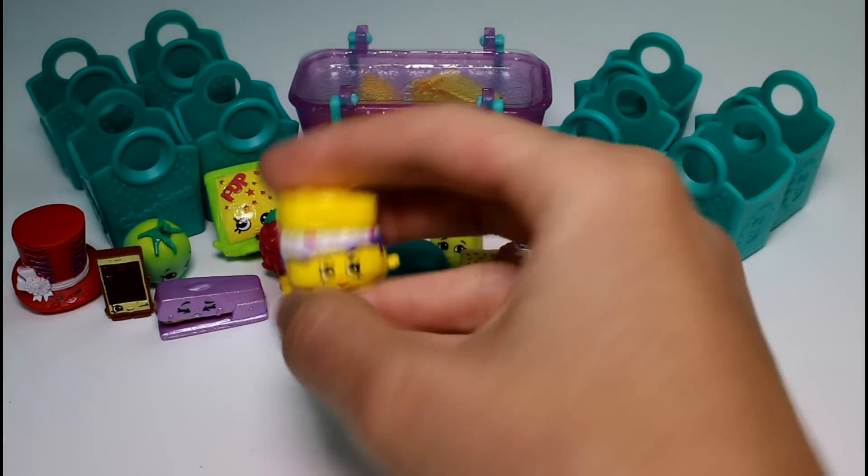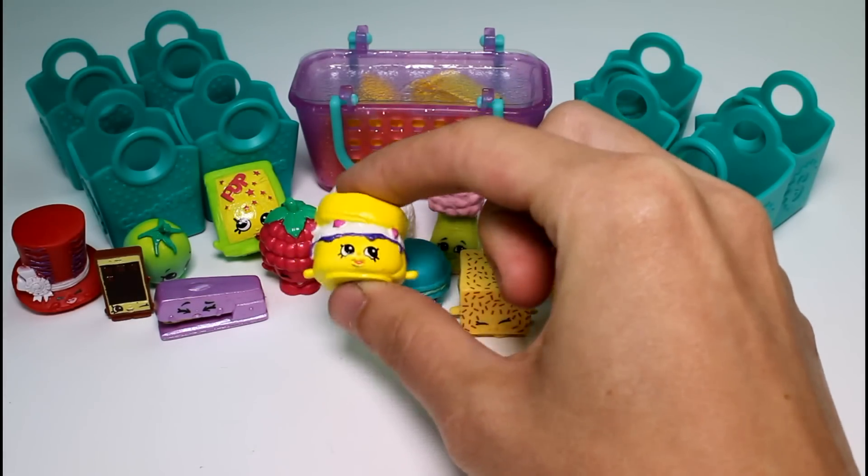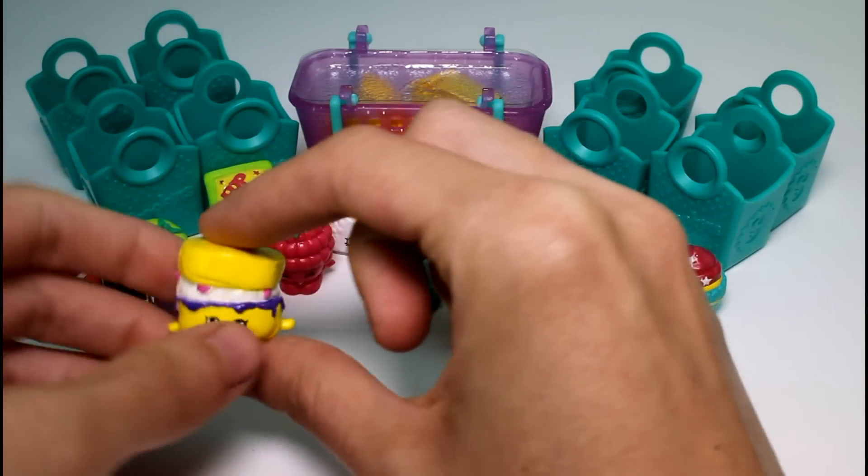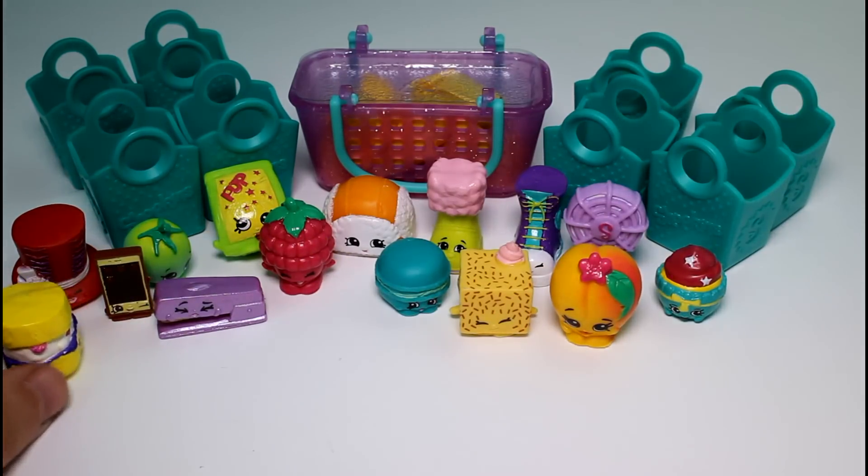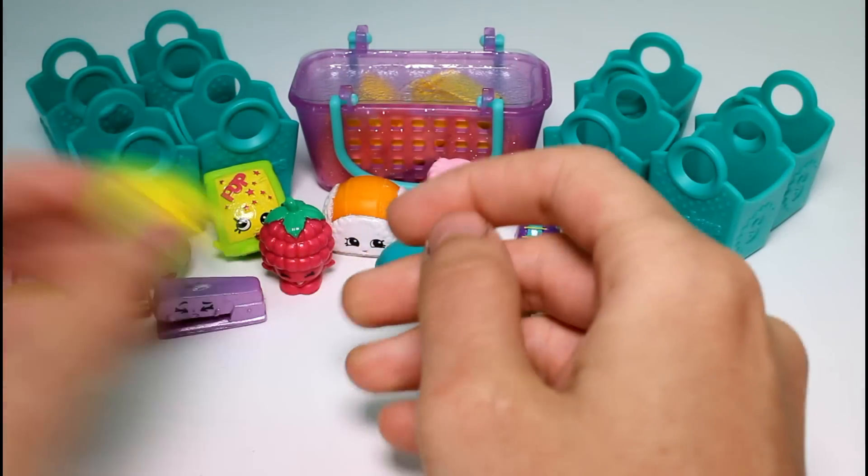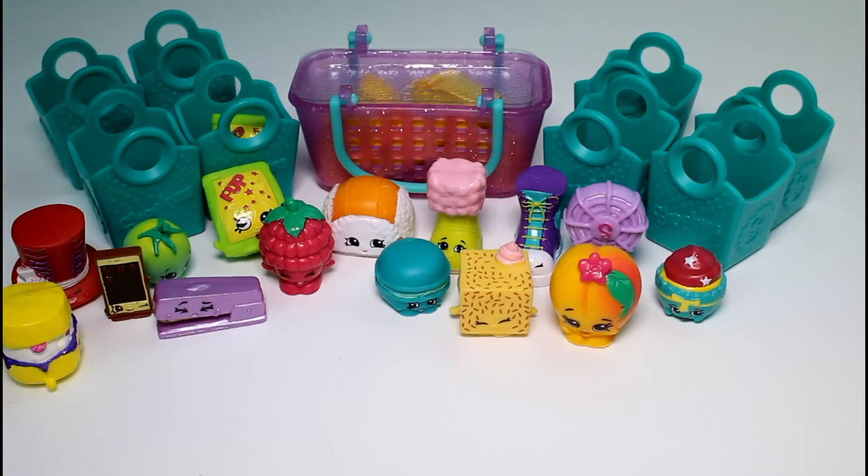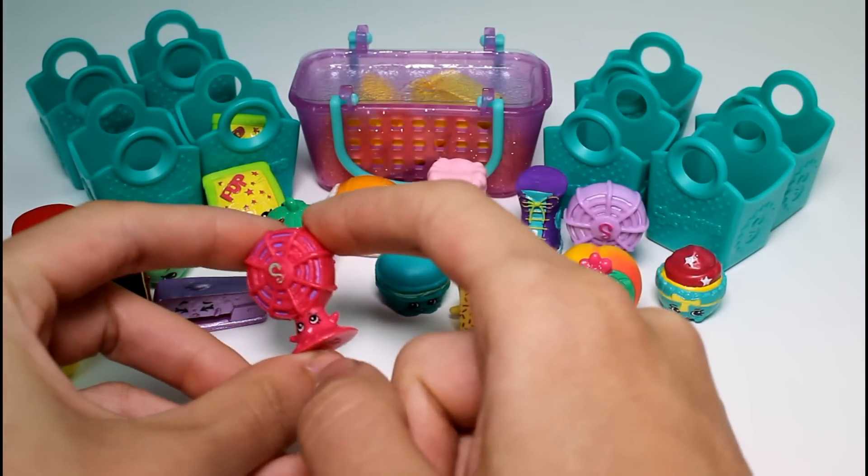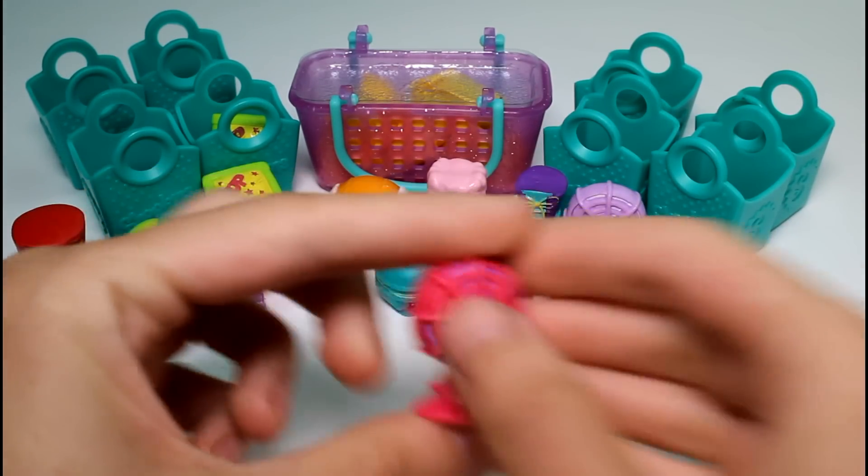And then we have Sconee. Sconee is common. And then we have Pop Rocks again. Boo. I'm going to put him in the bag because he's a duplicate. And then we have Bloan. She's a common.